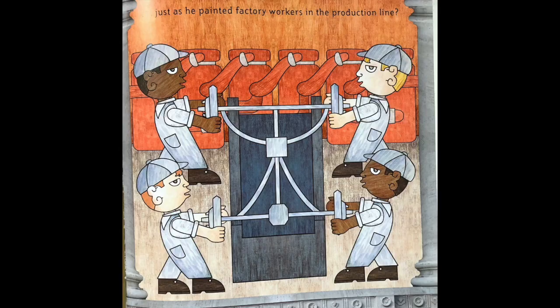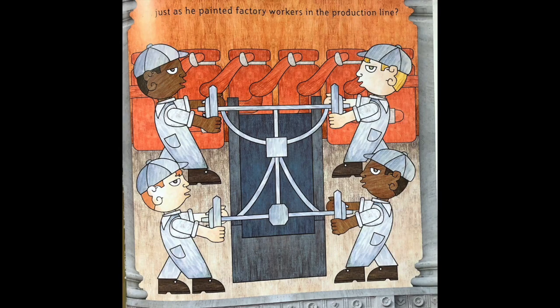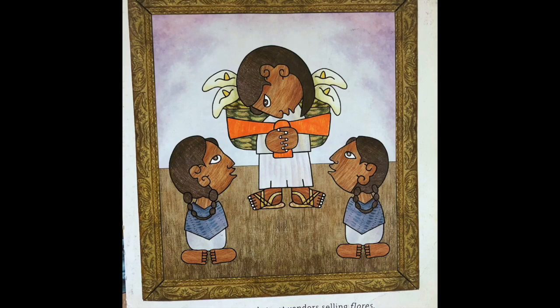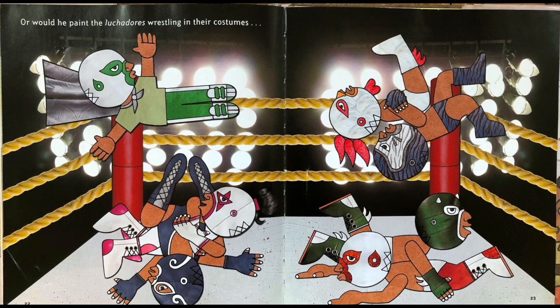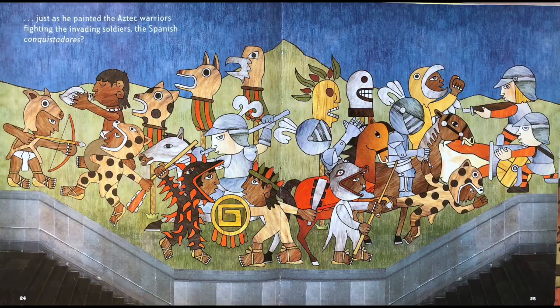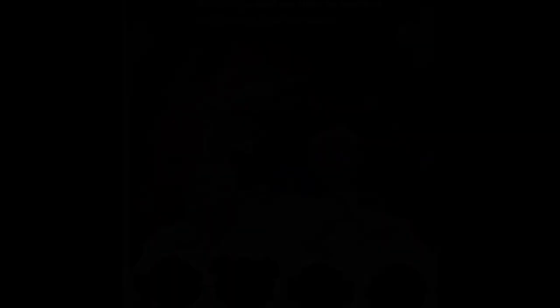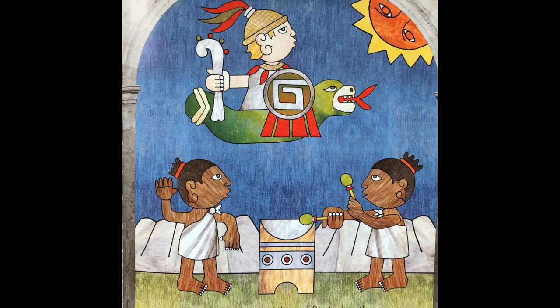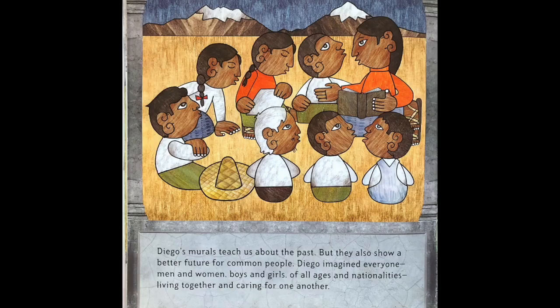Or would he paint students at their desks just as he painted factory workers in the production line? Maybe Diego would paint shops at the mall as he painted street vendors selling flores. Or would he paint the luchadores wrestling in their costumes just as he painted the Aztec warriors fighting the invading soldiers, the Spanish conquistadores? Would Diego paint our craze for monsters and creatures from outer space? Diego's murals teach us about the past, but they also show a better future for common people. Diego imagined everyone, men and women, boys and girls of all ages and nationalities living together and caring for one another.